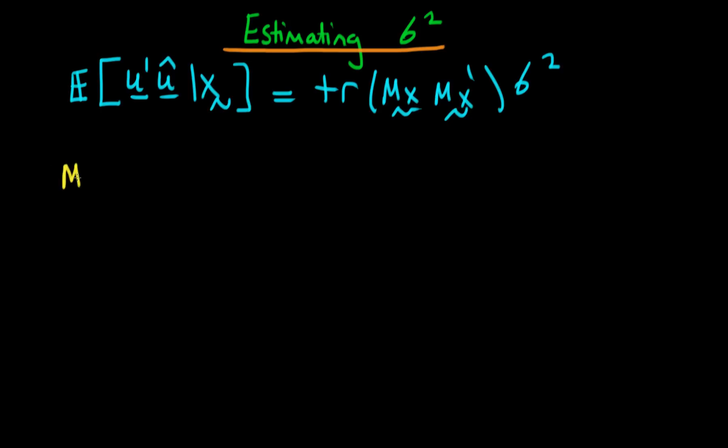So let's just remind ourselves of what mx is. mx is equal to the identity matrix minus the orthogonal projection matrix onto the column space of x which we call px.